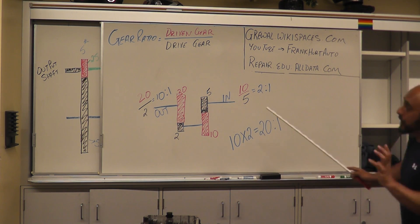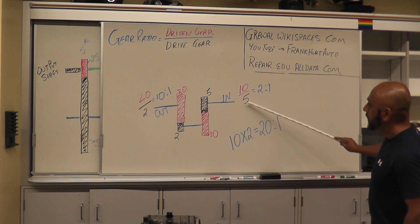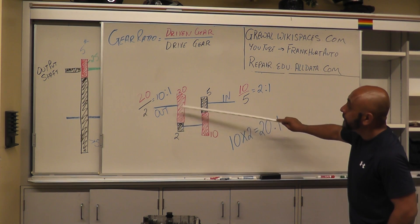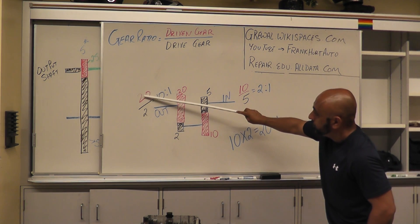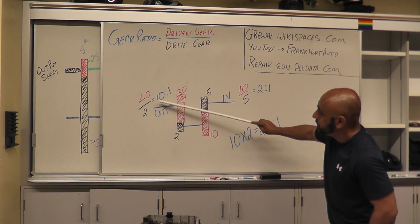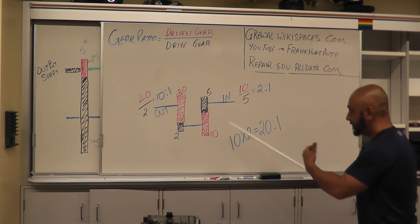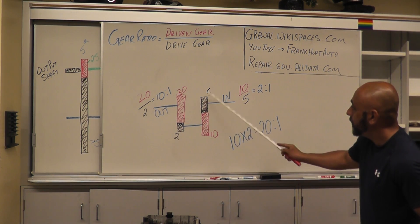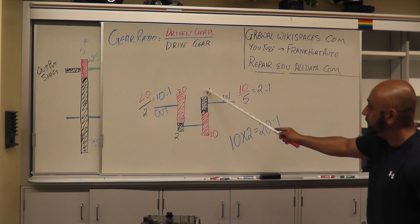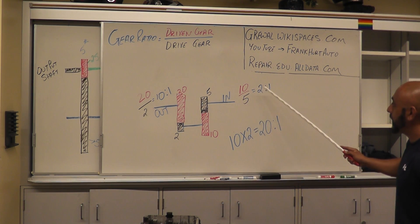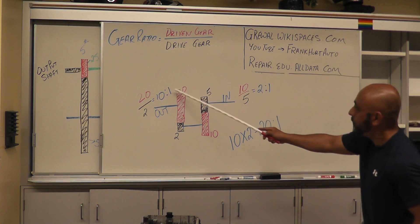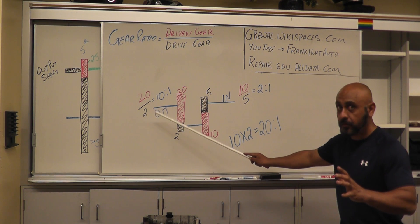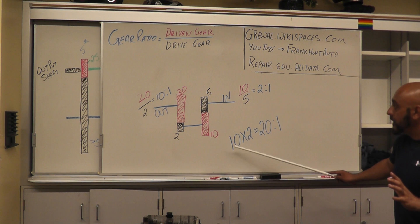We've got to calculate the separate sets of gears. Driven gear over drive gear: 10 over 5 gives you a 2 to 1 ratio. For the other set of gears, we have 20 teeth and 2 teeth — 20 is your driven gear, 2 is your drive gear — which gives you a 10 to 1 ratio. What's different with two sets of gears is you have to multiply both ratios together: 10 × 2 = 20, and 1 × 1 = 1, so the total ratio between the input shaft and output shaft is 20 to 1.